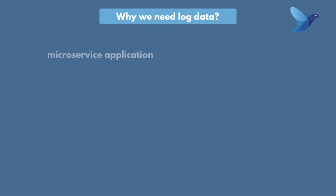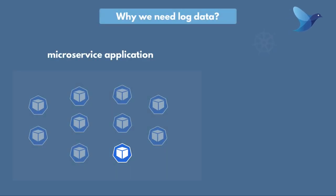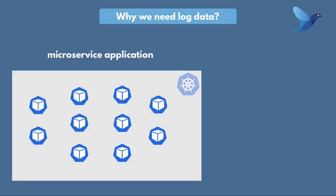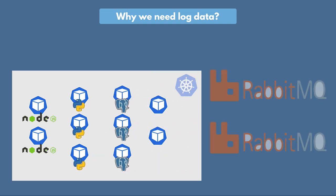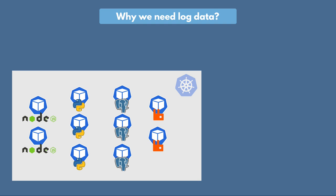Let's say we have a microservices application deployed in a Kubernetes cluster — two applications in Node.js, a couple of Python applications, maybe databases, a message broker and other services. All these applications talk to each other and produce log data, so each of these services is logging information about what the application is doing. What are some of the information these applications are logging and why do we need this log data?